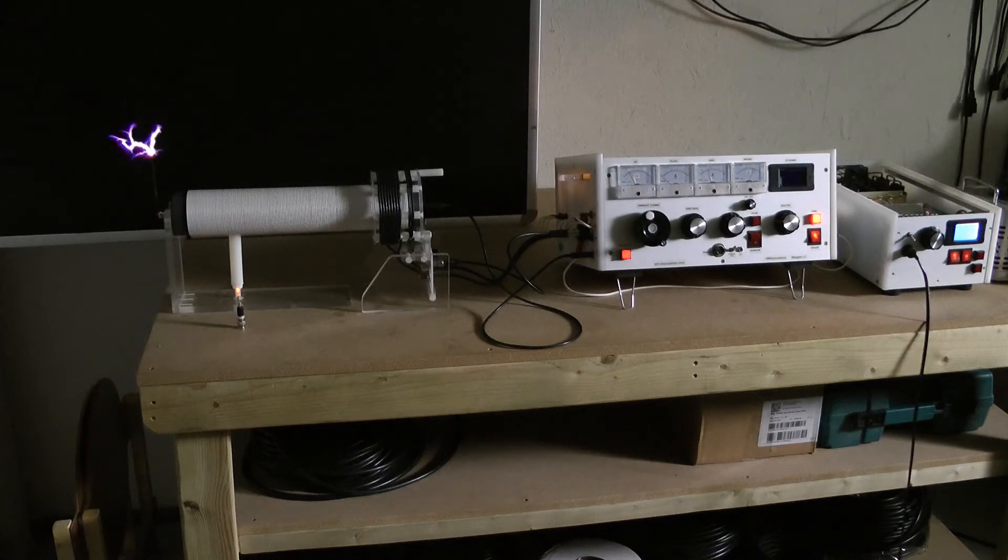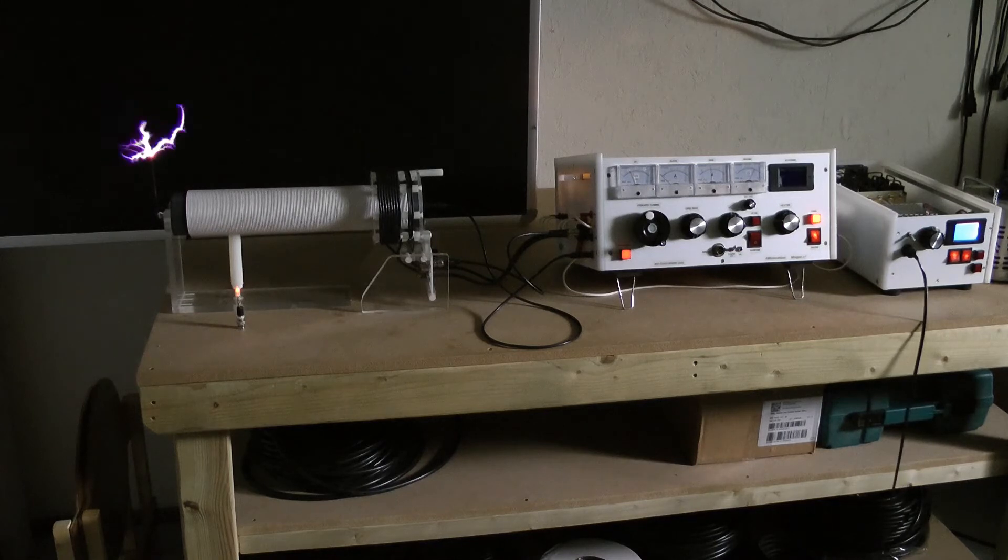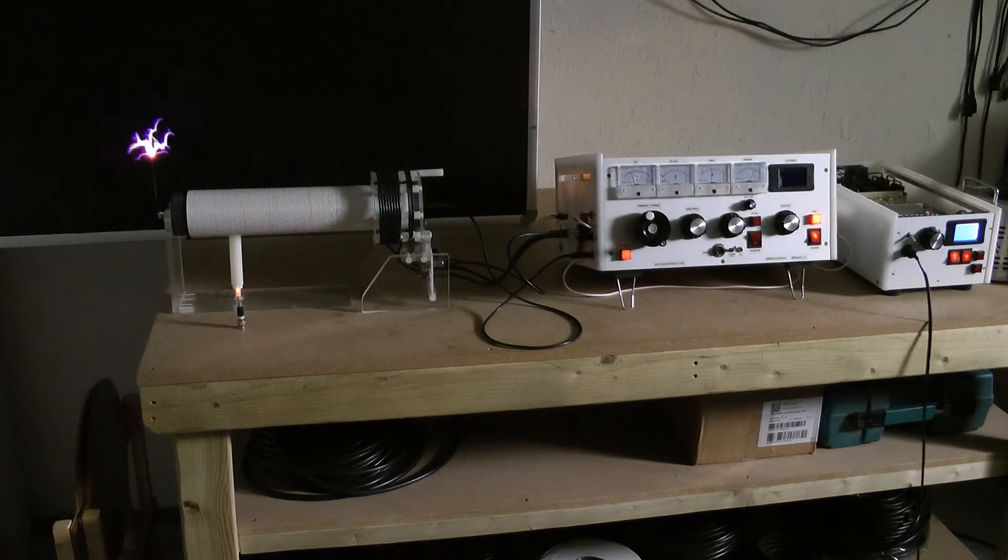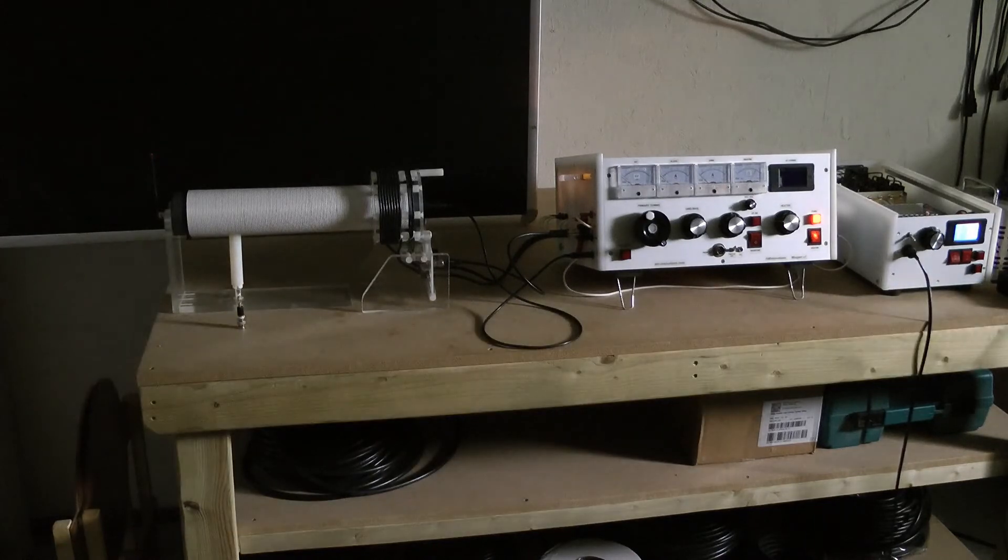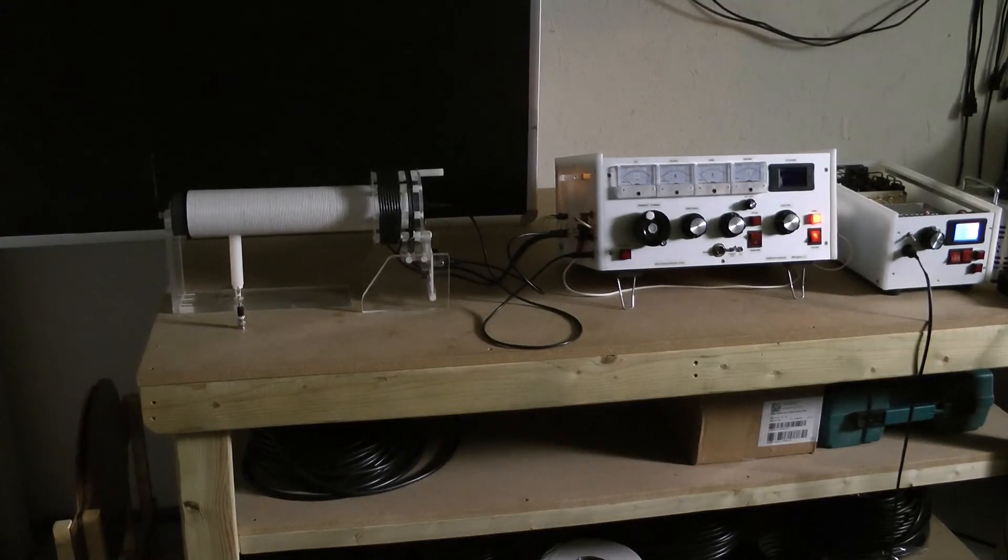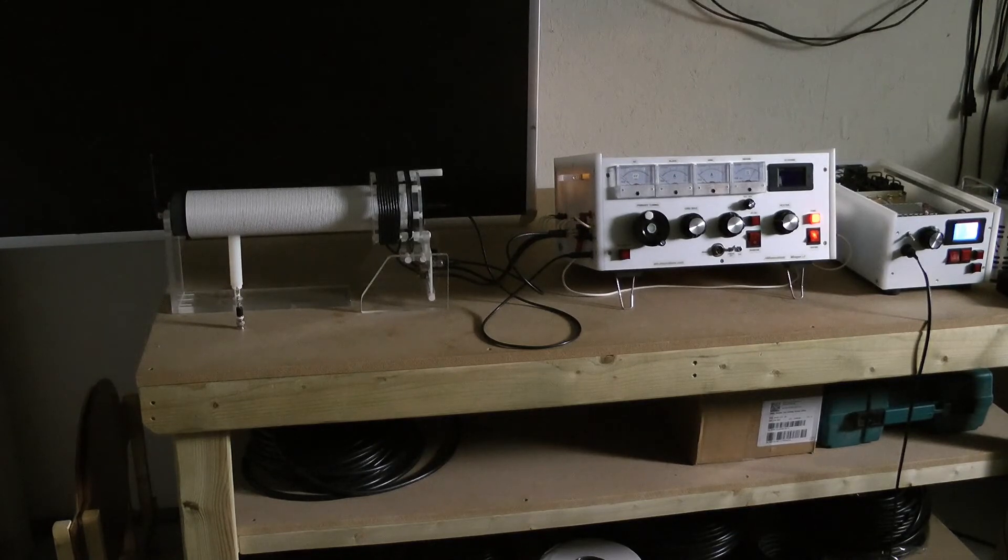I'm going to move the camera in closer so we get a nice close up view of the discharge. I've moved the camera in close now. We are right in front of the discharge. Here is the discharge point on the end of the secondary coil. We've got the blackboard behind so we get a very good definition of the discharge.